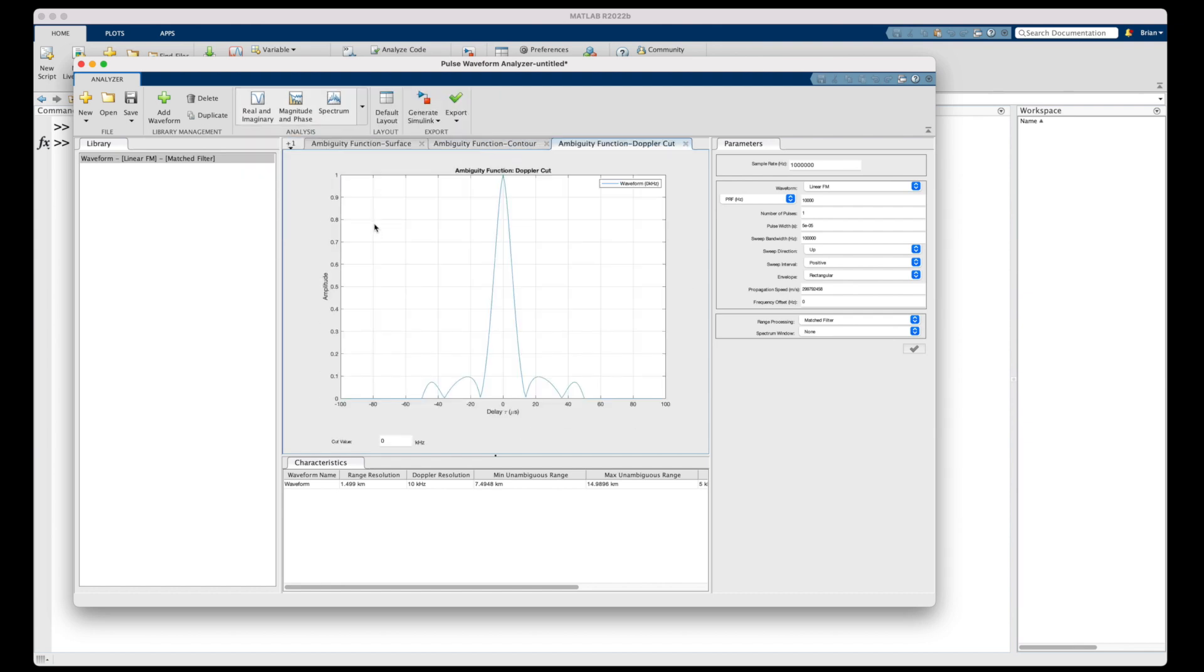So like I said, this app is nice to visualize the ambiguity plots for different waveforms and with different parameters, which I think is going to help you understand how each of these waveforms impact the radar performance. I think it's all really interesting. And so I hope you check it out. I've linked to this app below.